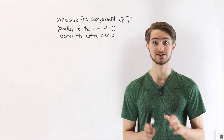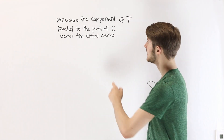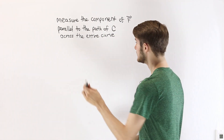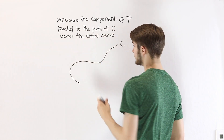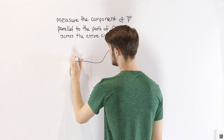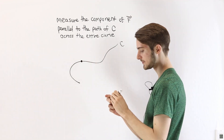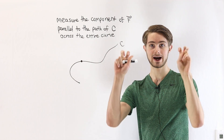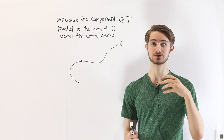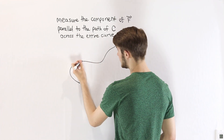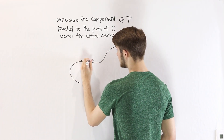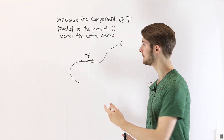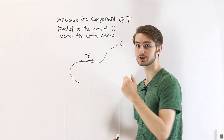In order to understand how we can do that, we need to start by thinking about how we can measure the component of f parallel to c at a single point. So let's say this is our curve c, and we want to measure the component of a vector field parallel to the path of c at this point. The first thing we need to do is think about how we can represent the idea of the path of c, and in order to do that we can use the derivative. More specifically, at some point along this curve c, we can represent the unit tangent vector, which is a vector of magnitude one that points in the direction that the curve c is moving.